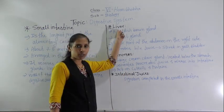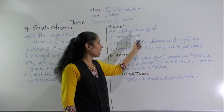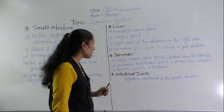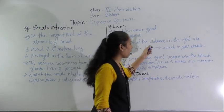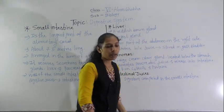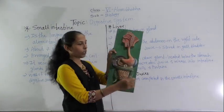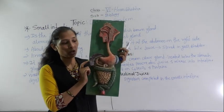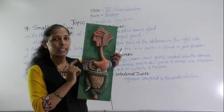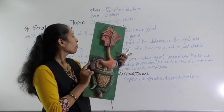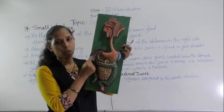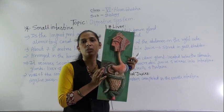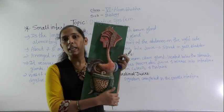Now let's discuss the liver. The liver is a reddish-brown gland and is the largest gland present in our body. It is situated at the upper part of the abdomen on the right side. In the model you can see this reddish-brown structure — that is the liver, the largest gland in the human body, located at the upper right side of the abdomen.